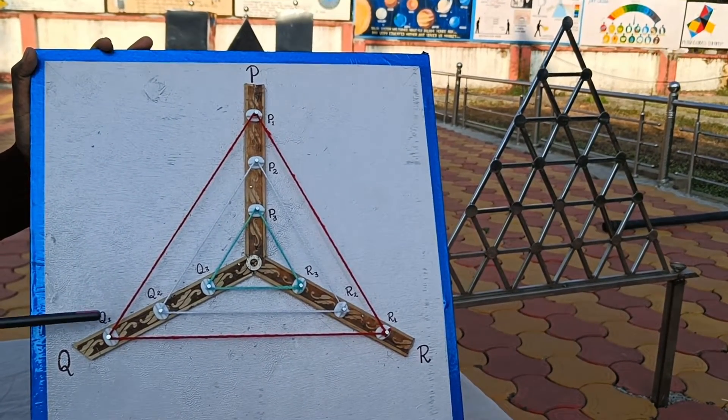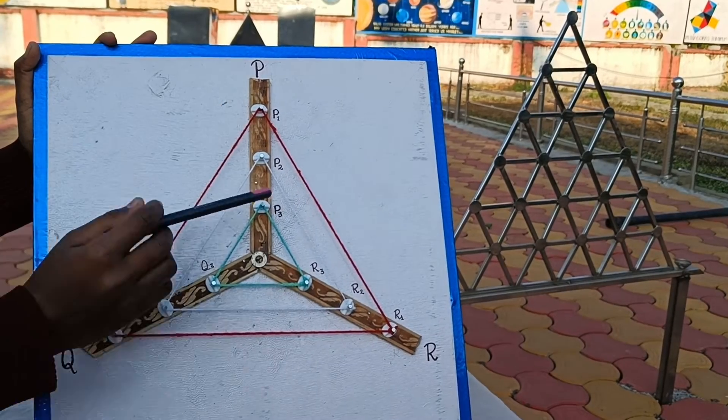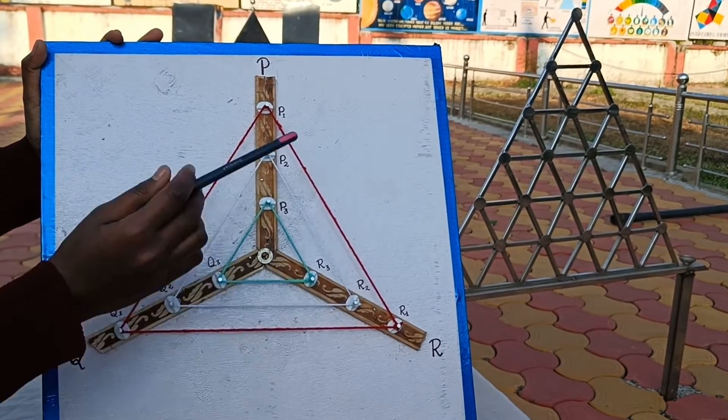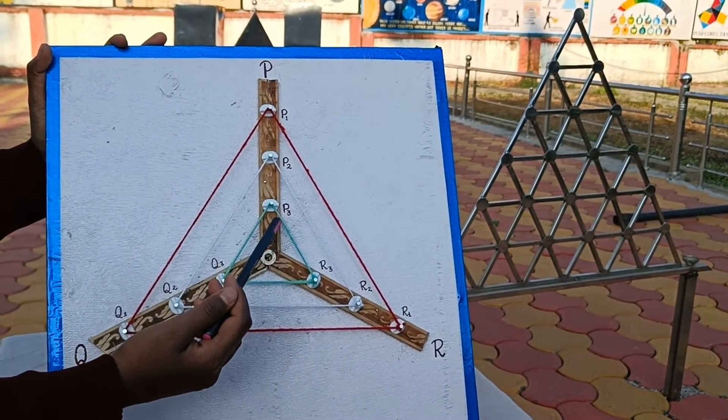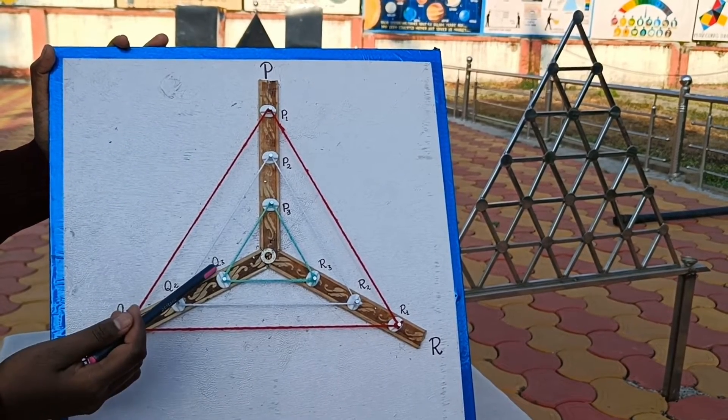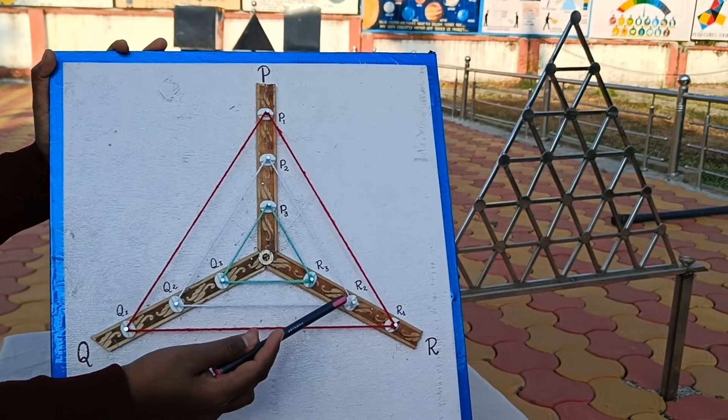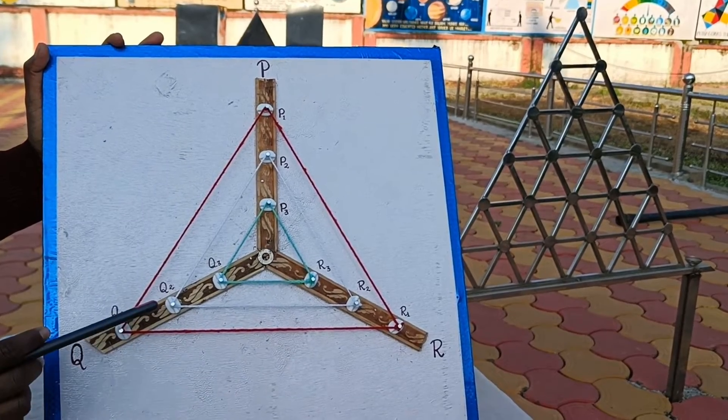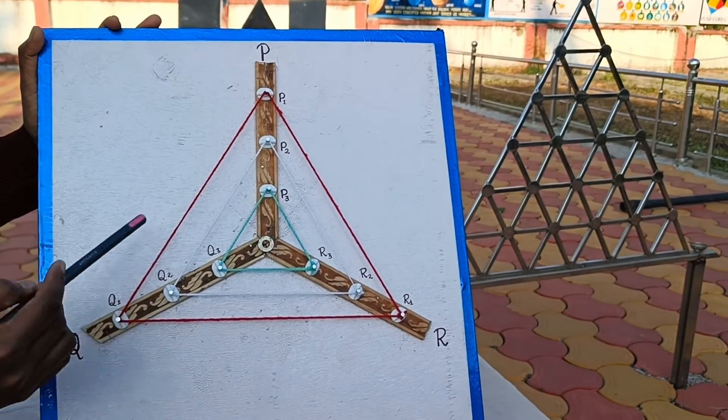Fix nails at equal distance on each of the strips and name them P1, P2, P3, Q1, Q2, Q3, and R1, R2, R3 on strip PQR respectively.